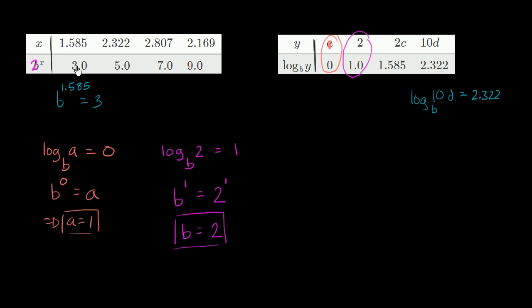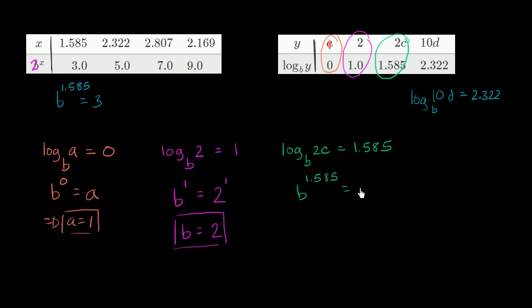This is a 2 right over here — it actually makes sense, two to the 1.585 power is about 3. Now let's see if we can figure out c. That column tells us log base b of 2c is equal to 1.585. Or in exponential form, b to the 1.585 is equal to 2c. Now what's b to the 1.585? Well they tell us right over here that b to the 1.585 is 3, so two c is equal to 3. Dividing both sides by 2, we get c is equal to 1.5.